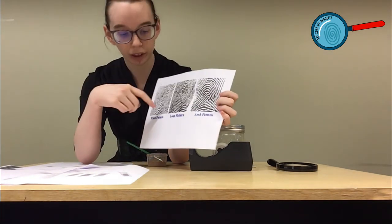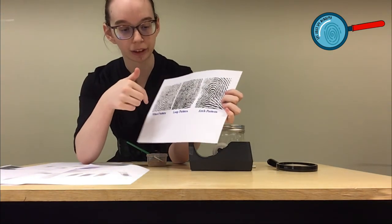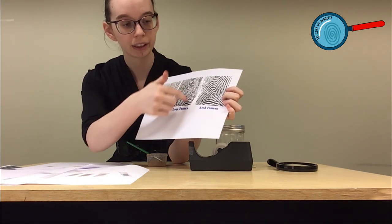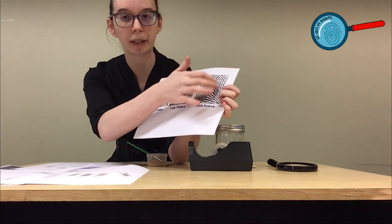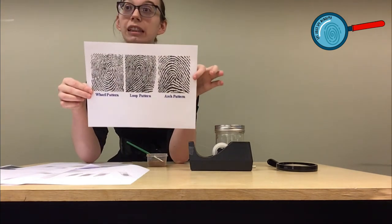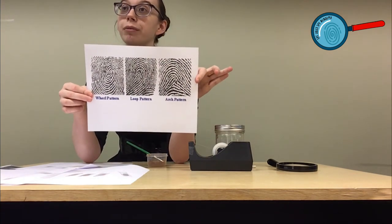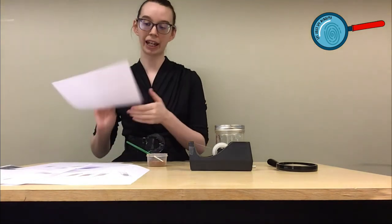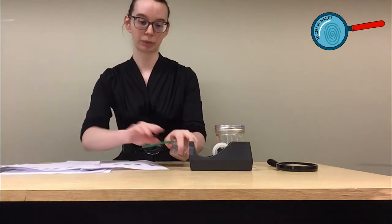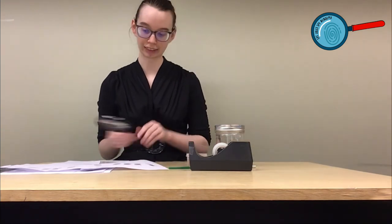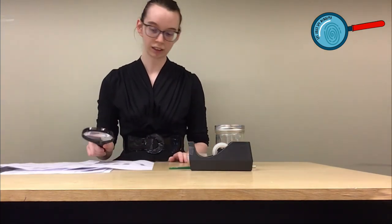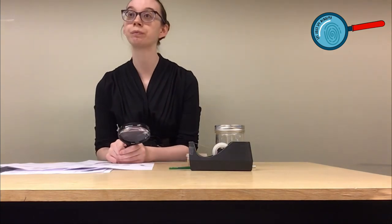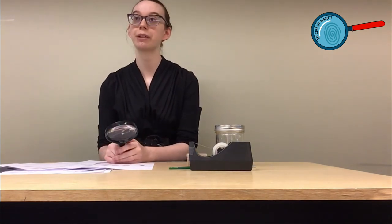You can see here that the whirl looks just like its name. It looks like a swirl. The loop is a little loop, and then the arch looks like a big bridge. So those are the three main types of fingerprints that people have. Now that we know that, and we have our fingerprint database, this is when it's really useful to get your magnifying glass out and compare the print you've taken to the prints that you have. Can you identify whose fingerprint you have lifted?